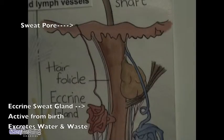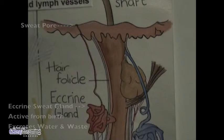They are called sudoriferous glands. The eccrine gland is found all over the body except for in the lips, eardrum and nails. It is numerous on the palms of the hands and soles of feet.